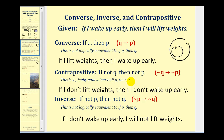And for the inverse, we would have if-not-P-then-not-Q. So we negate the hypothesis and conclusion. So we'd have: if I don't wake up early, I will not lift weights. If I don't wake up early means I'm outside P. So if I'm outside P, then I will not lift weights, meaning I'm outside Q. But just because I'm outside P doesn't mean I'm outside Q. Therefore, this is not logically equivalent to if-P-then-Q, which means it may be true or false.